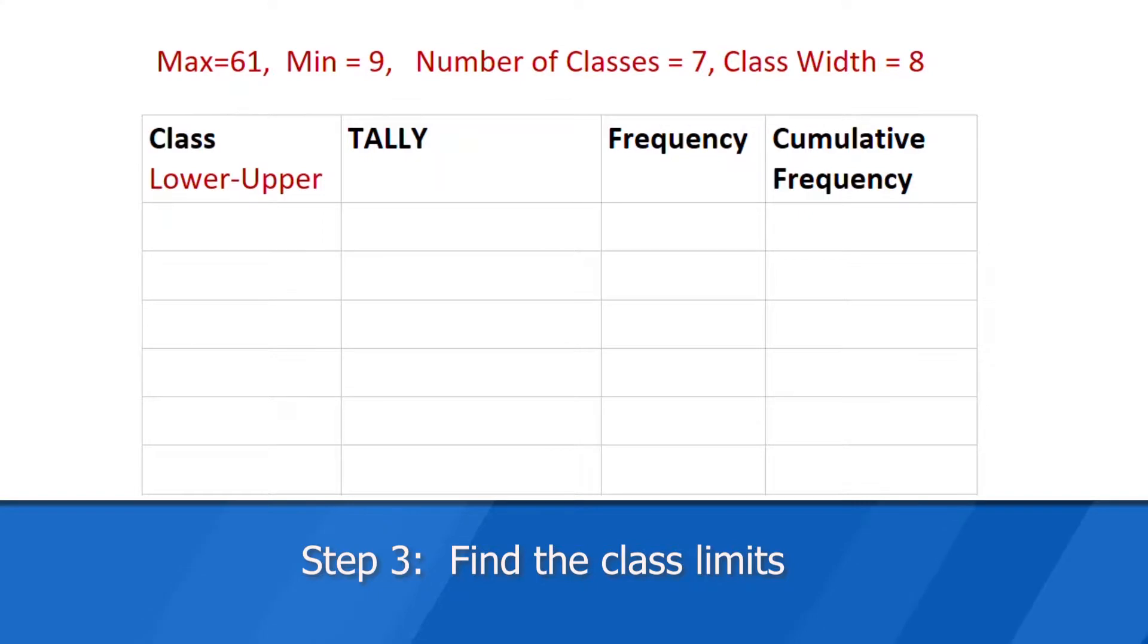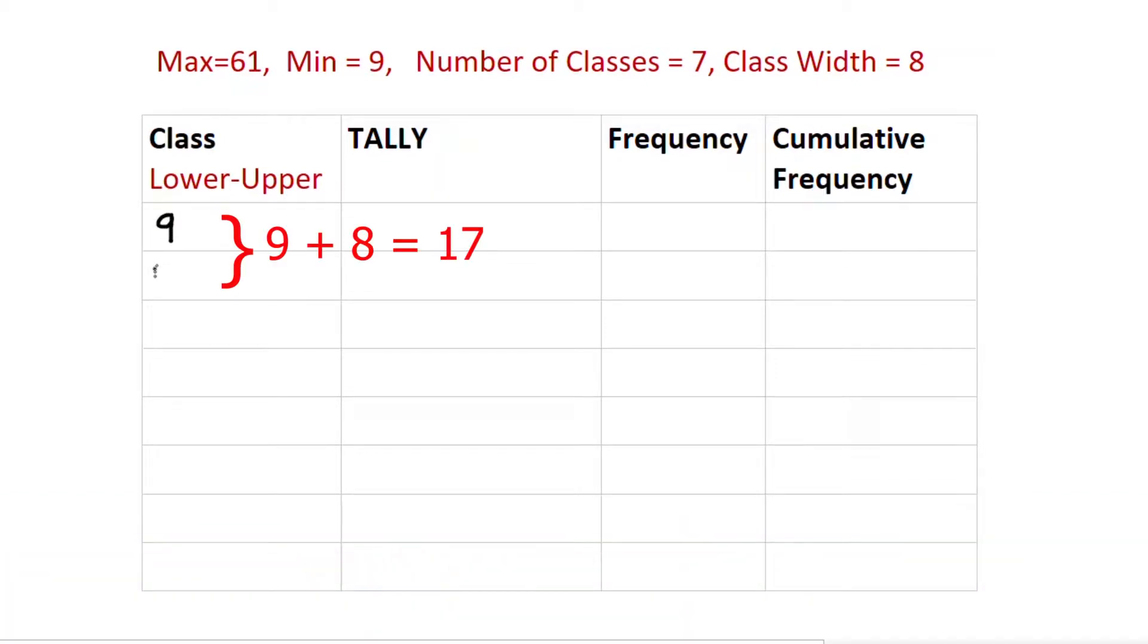Next, we want to find those class limits. And we're going to start with the minimum data value or nine. Now the width is eight. So nine and eight is 17. And that's the next lowest value. Add eight again. So 17 and eight is 25. And just keep doing that. 25 and eight is 33. Continue to do that. Now this has got to come up to 17, but it can't overlap. So the upper here is 16. This has to come up to 25, but it can't overlap. So this is 24. And similarly, this has to come up to 33, but it can't overlap. So we go to 32. Continue to do that until you've got all seven classes.